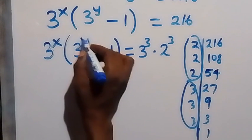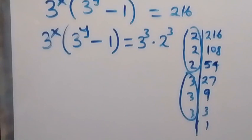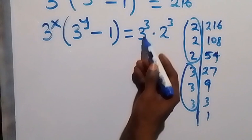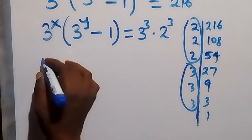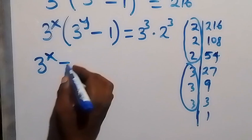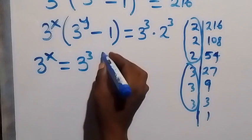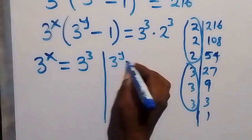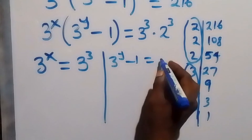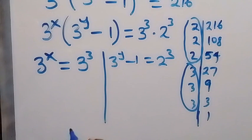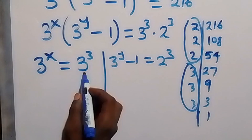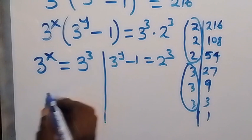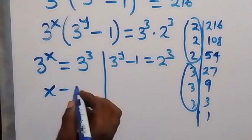When we compare both sides, we can match 3 raised to power x with 3 raised to power 3. Since the bases are the same on both sides, we equate the exponents and get x equals 3.